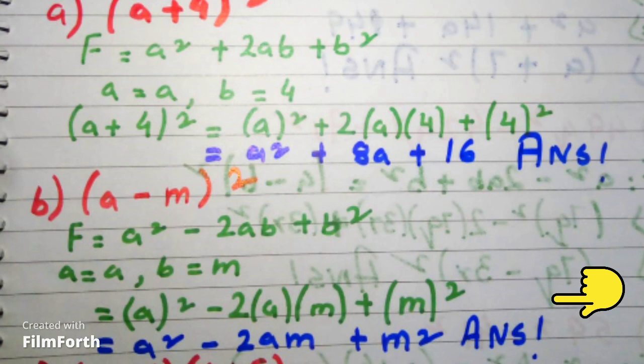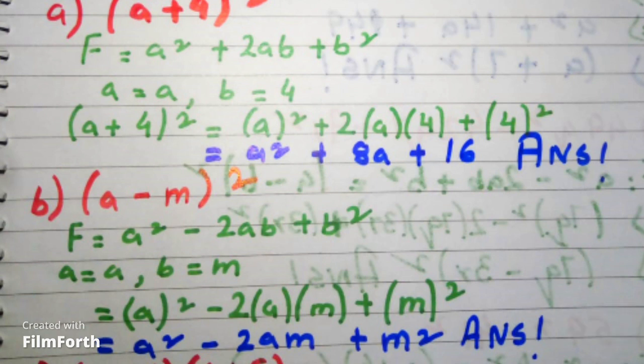Now (a - m)² is equals to a² - 2am + m². That is our answer for the second identity.